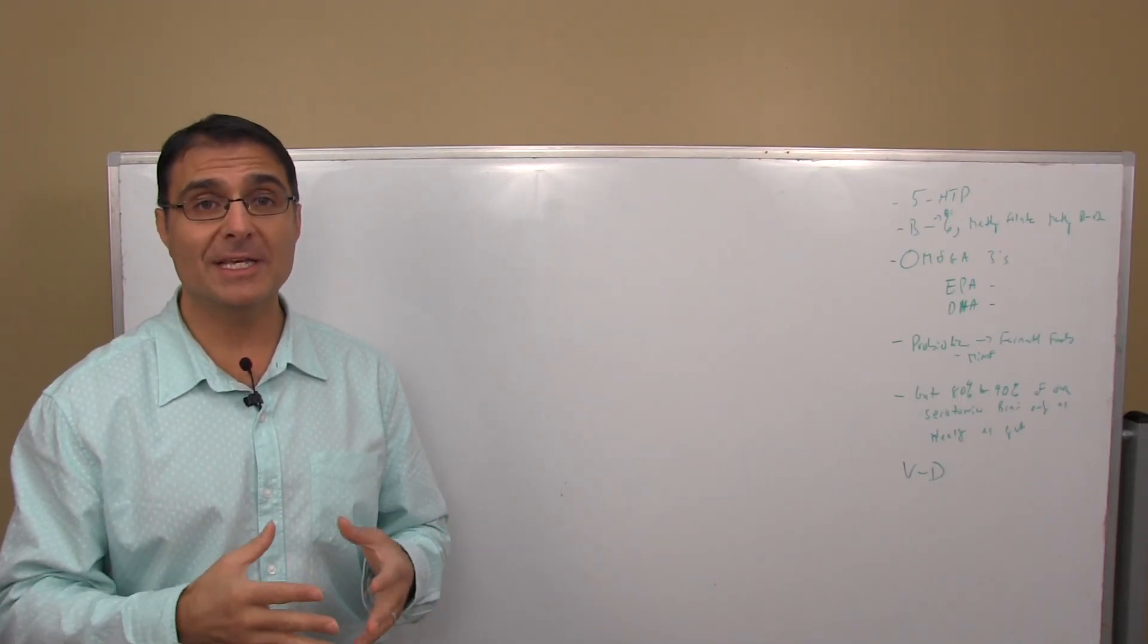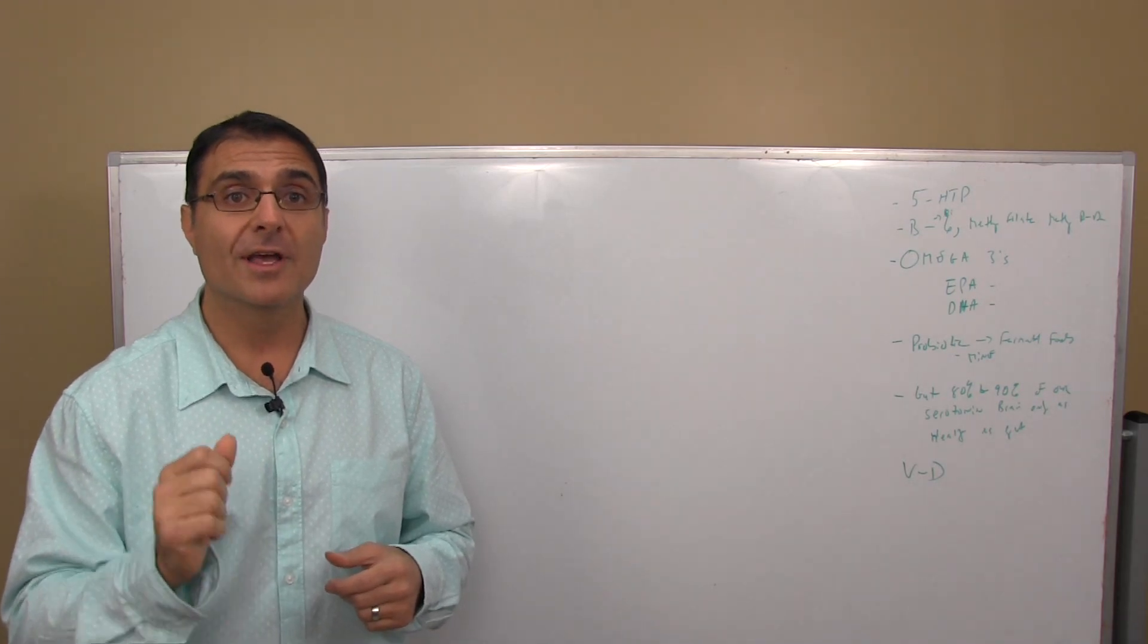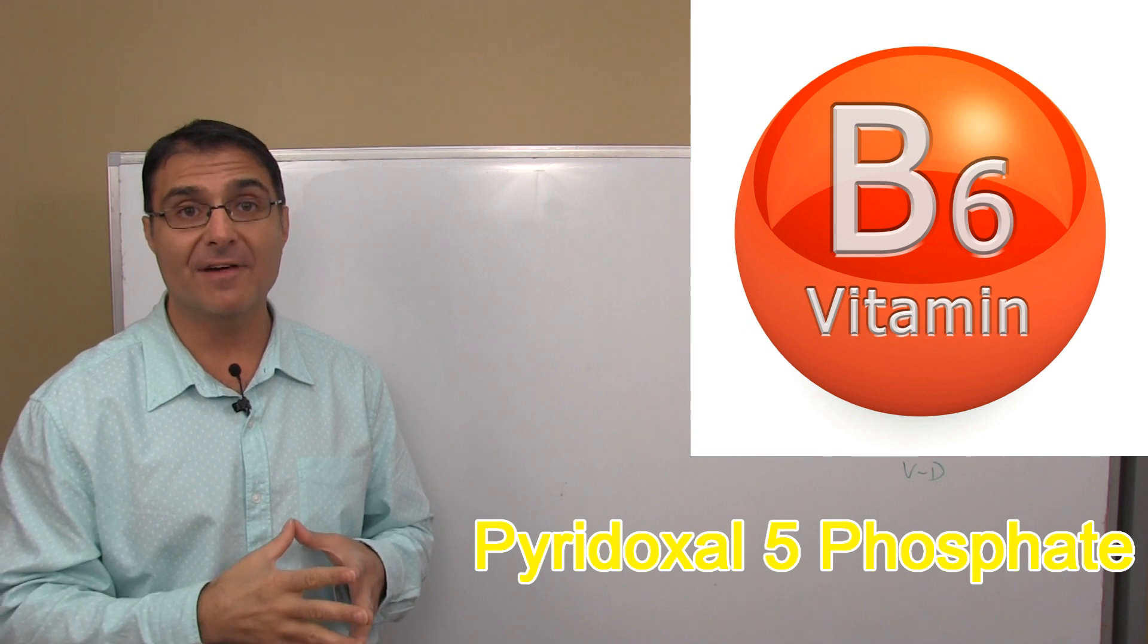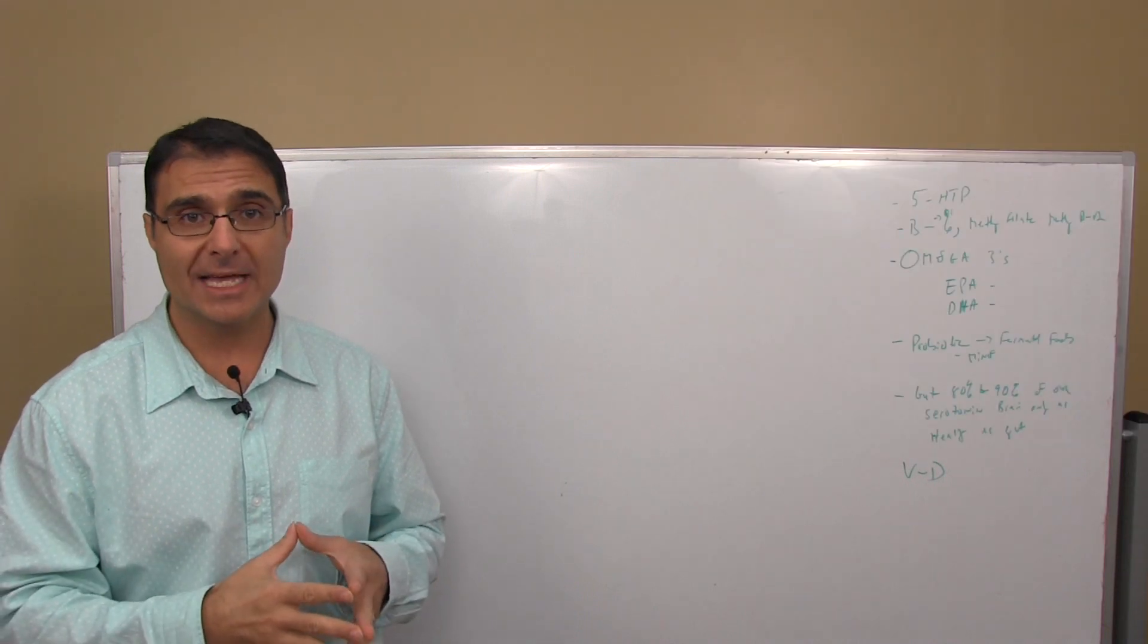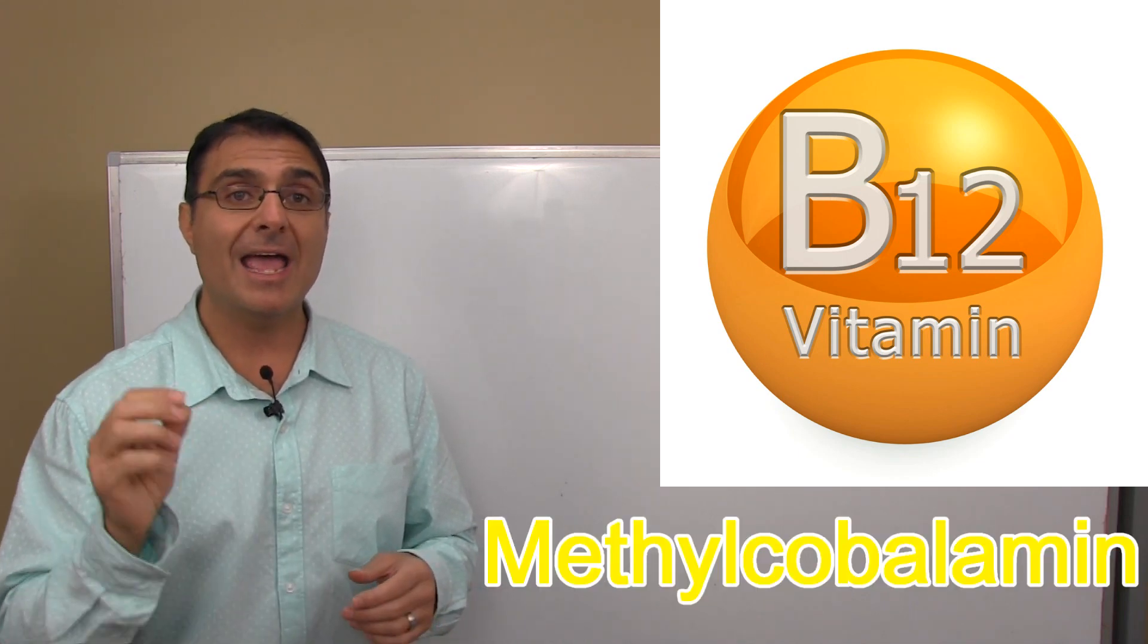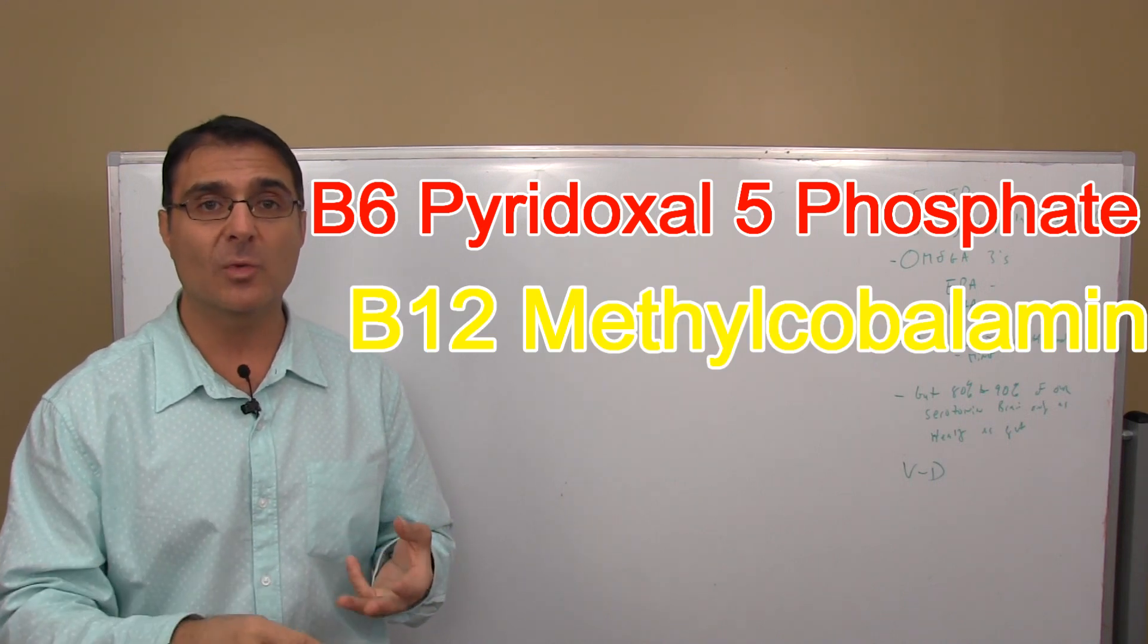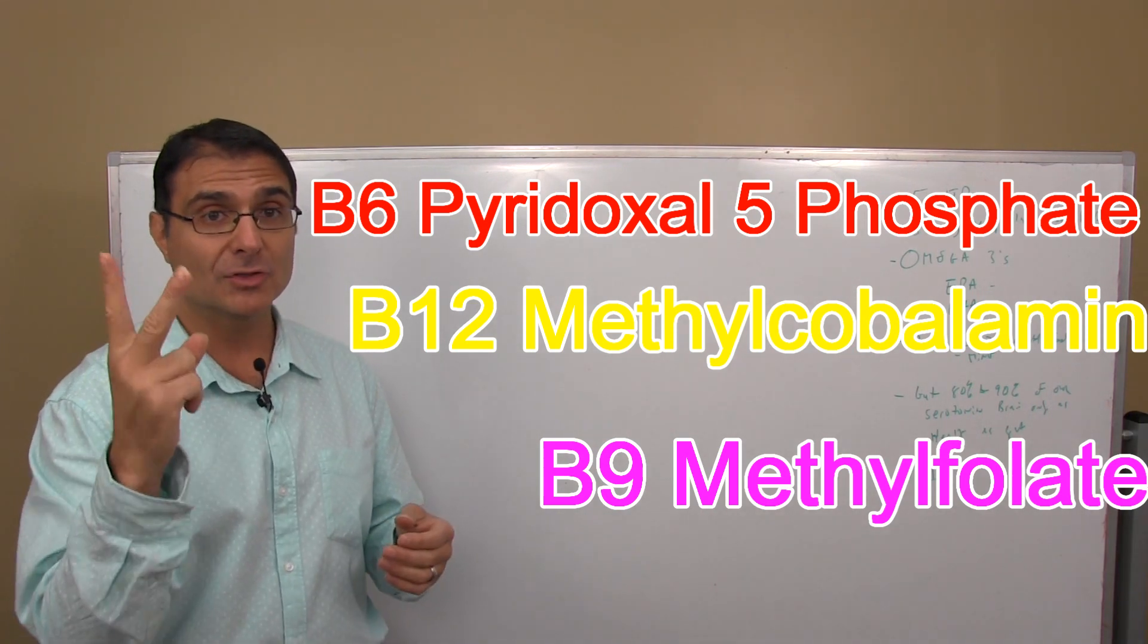Now when your body takes 5-HTP and turns it into serotonin, it needs a vitamin. It needs vitamin B6, which is very important for the conversion of 5-HTP into serotonin. So guess what my number two is on the list? It's vitamin B6, but take the active form known as pyridoxyl-5-phosphate. The reason why it's better to take the active form is some of us have problems with activating our B6. In addition to B6, you should also have B12 in its active form known as methylcobalamin, and folic acid or vitamin B9 in its active form called methylfolate. Those should absolutely be included as my number two item on the list.